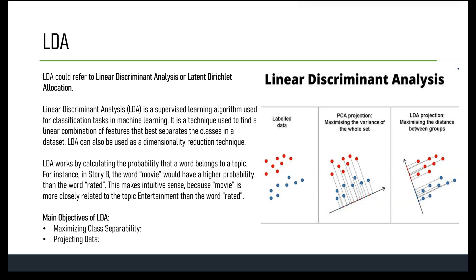Unlike PCA, which focuses on capturing variance in the entire dataset, LDA aims to find a subspace that maximizes class separability. The main objective is maximizing class separability — LDA finds a linear combination of features that best separates multiple classes by maximizing between-class distance while minimizing within-class variance.